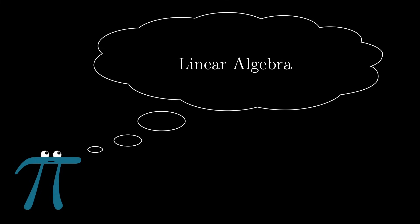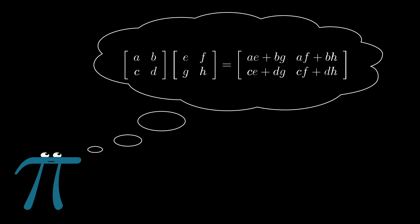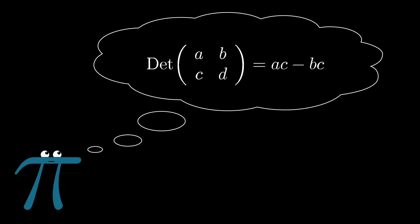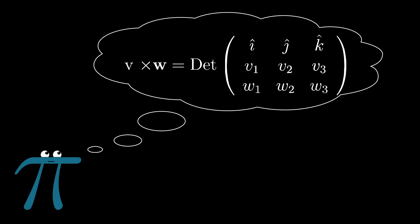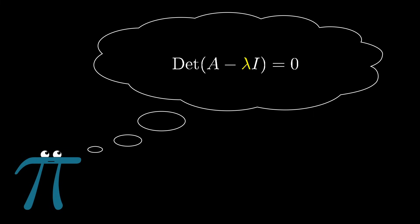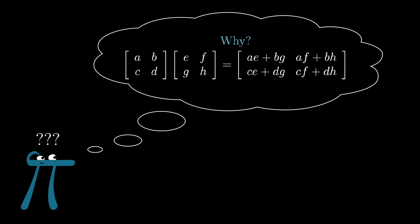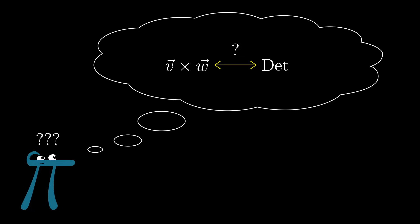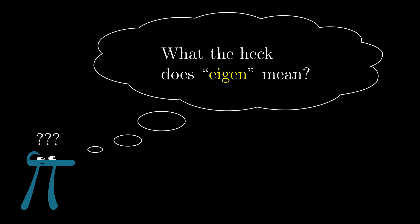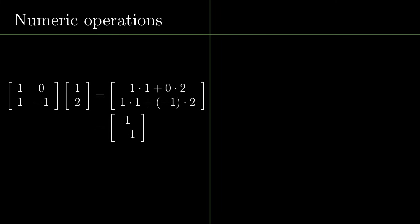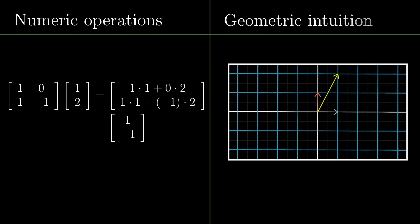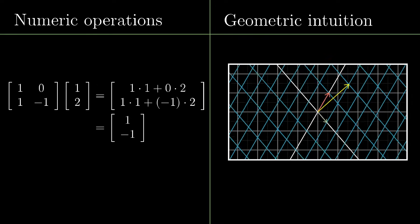A student might go through a class and learn how to compute lots of things, like matrix multiplication, or the determinant, or cross products which use the determinant, or eigenvalues, but they might come out without really understanding why matrix multiplication is defined the way that it is, why the cross product has anything to do with the determinant, or what an eigenvalue really represents. Oftentimes students end up well-practiced in the numerical operations of matrices, but are only vaguely aware of the geometric intuitions underlying it all.